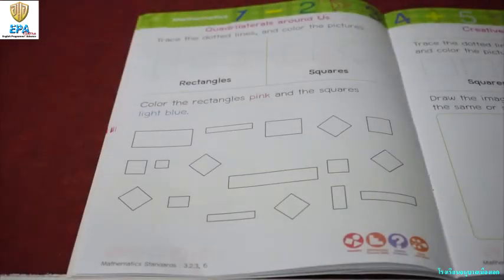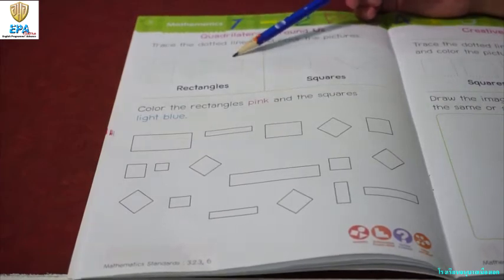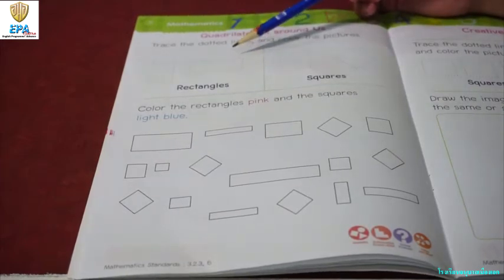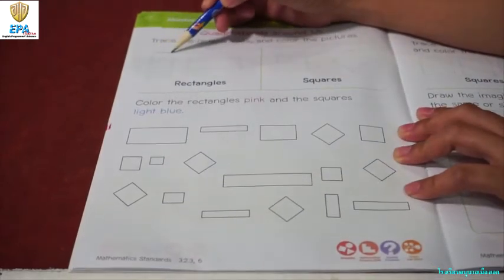Quadrilaterals around us. Trace the dotted lines and color the pictures. Kids, what shape is this? Is it a square or a rectangle? Very good! Rectangle. Now, let's trace it.